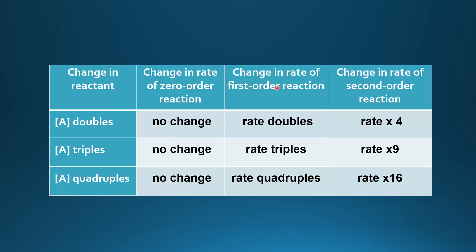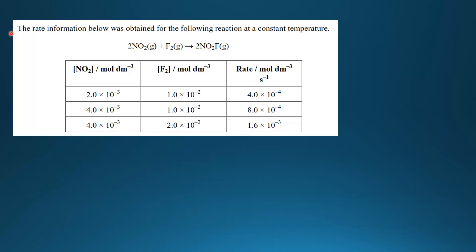So here we have the change in reactant and the changing rate for zero order, first order, and second order reactions. If we double the concentration of A: no change for zero order, the rate doubles for first order, and the rate increases by a factor of four for second order. If we triple the concentration of A: no change for zero order, the rate triples for first order, and the rate increases by a factor of nine for second order — it's the square of the change. If the concentration of A quadruples: no change for zero order, the rate quadruples for first order, and increases by four squared, which equals sixteen, for second order.